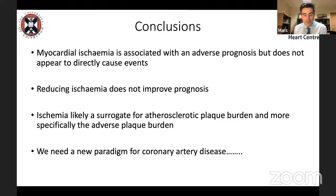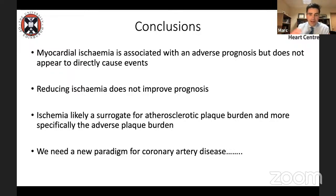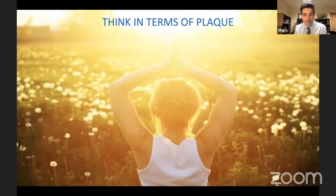In summary, our field has long used the ischemia paradigm for coronary artery disease, but whilst ischemia is associated with adverse prognosis, reducing ischemia does not reduce those events — the relationship does not appear causal. Ischemia is probably a surrogate for atherosclerotic plaque burden. Stenting a lesion relieves ischemia but hasn't changed the plaque burden, so risk remains high. We should shift our thinking away from ischemia toward plaque burden, plaque type, and plaque activity assessments — think about patients in terms of their plaque. Don't forget ischemia for symptoms, but really try to modify our paradigm for approaching coronary arteries.